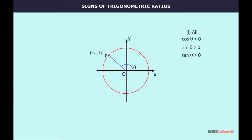In the second quadrant, theta lies between 90 degrees and 180 degrees. Then A is negative and B is positive. As the radius of a circle is the distance between two points, it cannot be negative, so OP is also positive. The coordinates of point P are (−cos theta, sine theta). Therefore, sine theta is positive and cos theta is negative, and so tan theta is also negative.